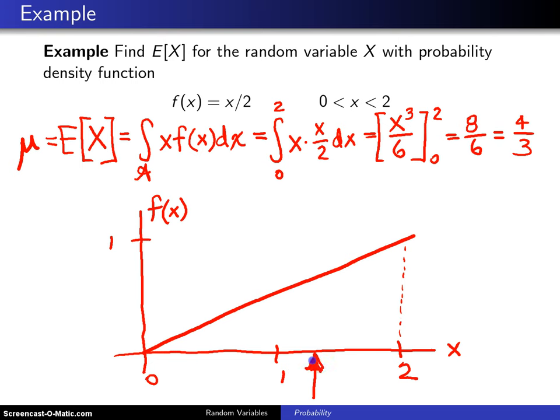So the probability interpretation of this 4 thirds is if I generate one value after another from this particular probability distribution, those values will all lie between 0 and 2, and if I grab a lot of those values and average them, their mean will converge to the population mean, which is 4 thirds.